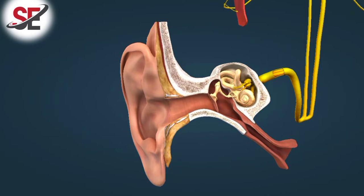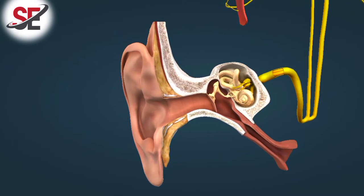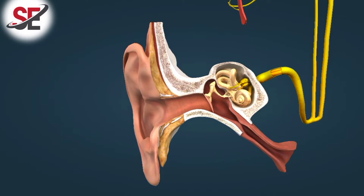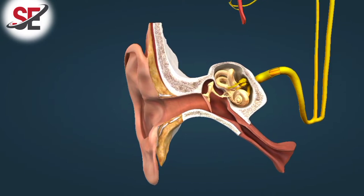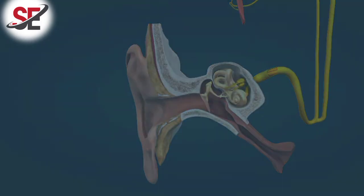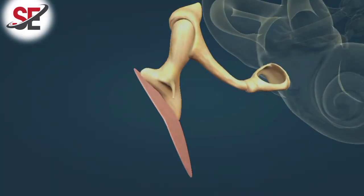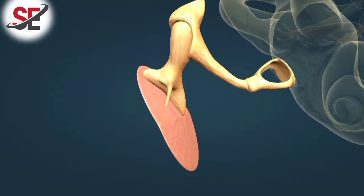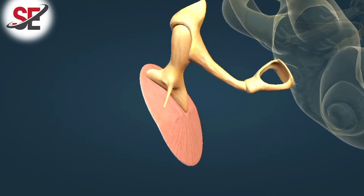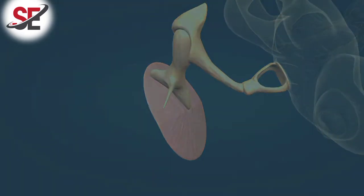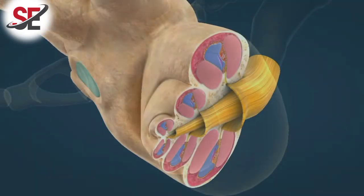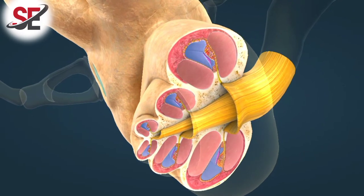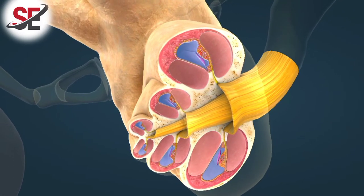Sound waves are directed into the external auditory canal by the auricle. Sound waves cause the eardrum, which closes the auditory canal, to vibrate. The vibration of the eardrum is transmitted to the cochlea by the ossicles: the hammer, the anvil, and the stirrup. The base of the stirrup fits snugly into the oval window of the cochlea.